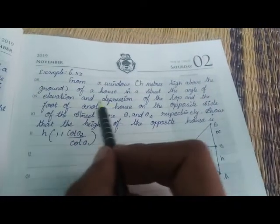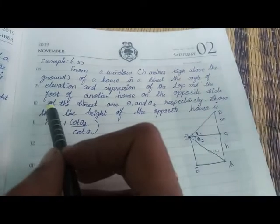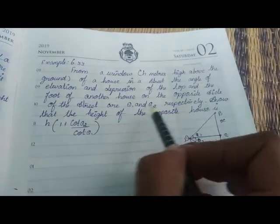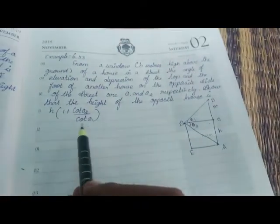the angle of elevation and depression of the top and the foot of another house on the opposite side of the street are theta1, theta2 respectively. Show that the height of the opposite house is the required expression.